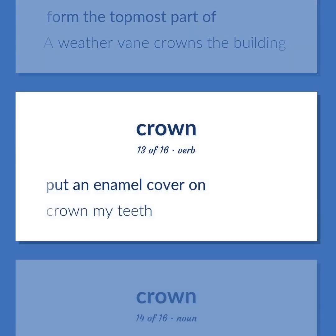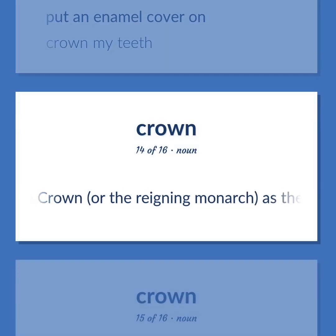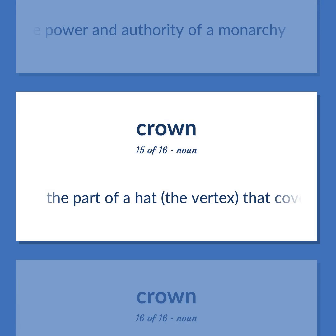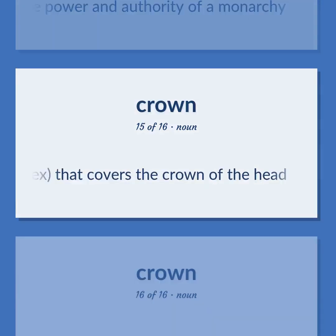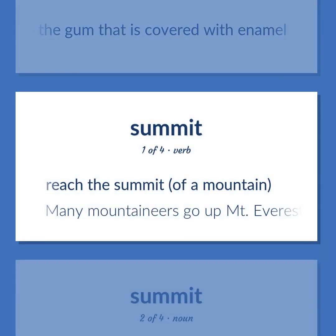Crown: Put an enamel cover on — crown my teeth. The crown, or the reigning monarch, as the symbol of the power and authority of a monarchy. The part of a hat — the vertex — that covers the crown of the head. The part of a tooth above the gum that is covered with enamel. Summit: Reach the summit of a mountain — many mountaineers go up Mount Everest but not all summit.